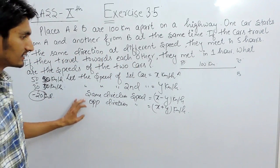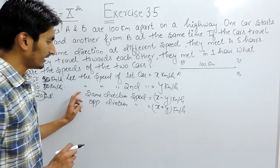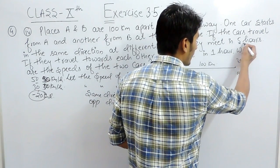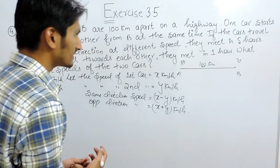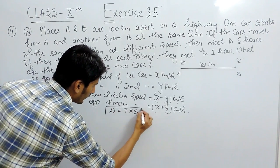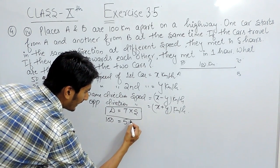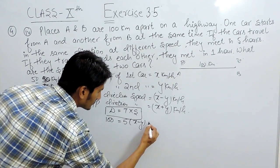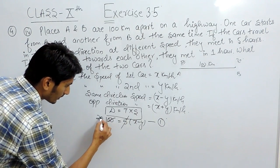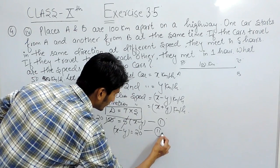In both cases they have to travel 100 km. In the first case, the speed is x minus y and they take 5 hours to cover 100 km. Using distance = speed × time: 100 = 5 × (x minus y). Simplifying, x minus y equals 20. This is our first equation.